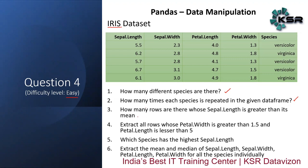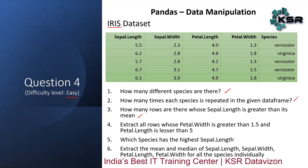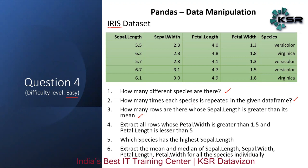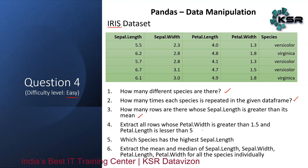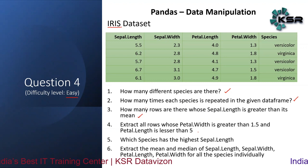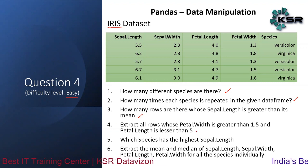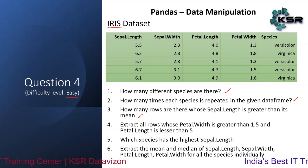The third question is: how many rows are there whose sepal length is greater than its mean? First find out the mean of sepal length, then find out how many rows have a sepal length greater than that mean value — just get the count of rows.